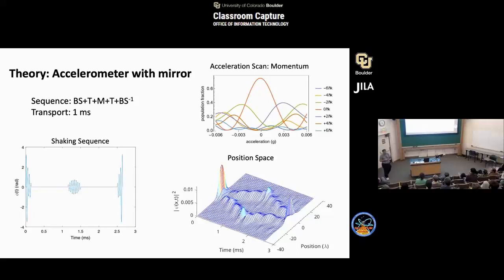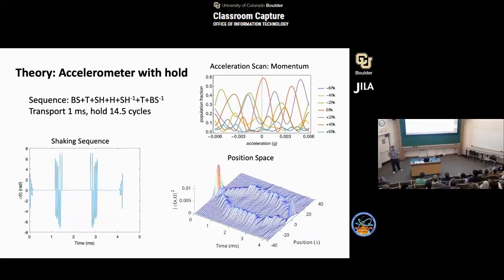If we make a beam splitter, allow the atoms to propagate, then make a mirror, allow the atoms to propagate, and make a reverse beam splitter, then we create a path where the atoms enclose an area and they make an accelerometer. If we look at the absorption images at certain parts in the sequence, you can see the condensate. You can see the atoms divide. You can see the mirror. This one goes over here and this one goes over here. So they swap places. We can see that by sending them just one way and not the other. Then you can recombine them.